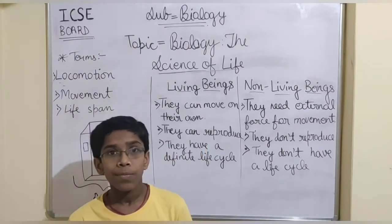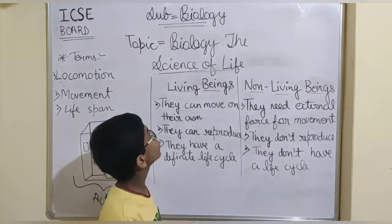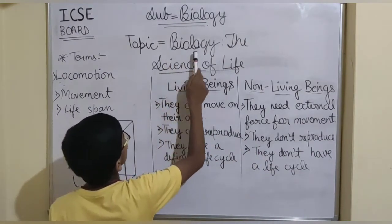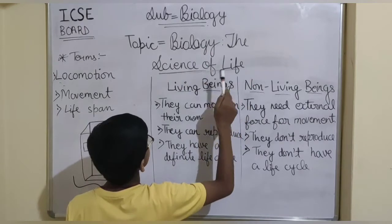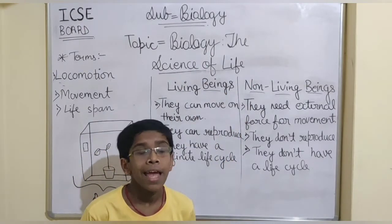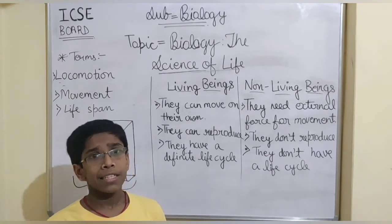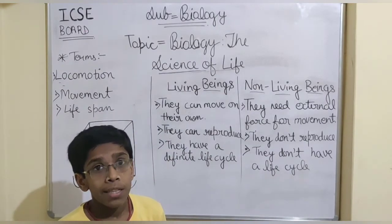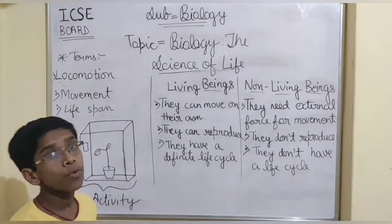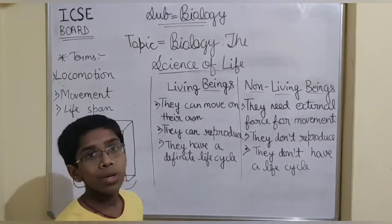Hello guys, I am Satya with our biology part 2. The topic of biology's first chapter is biology, the science of life. It has been categorized into living beings and non-living beings. We are studying more characteristics of non-living beings. There are three characters of non-living beings written in the chapter. So, let's start.